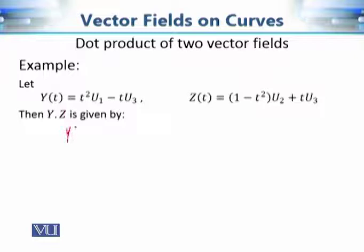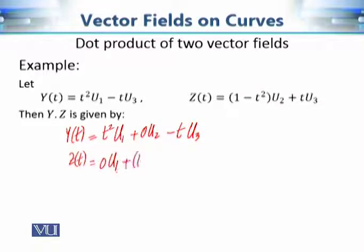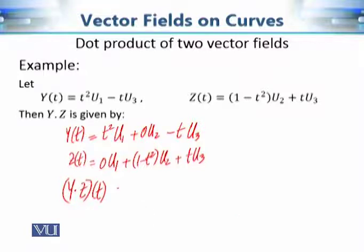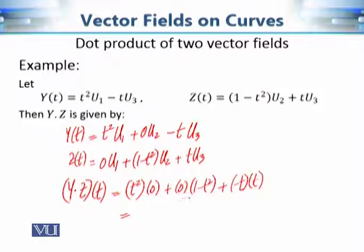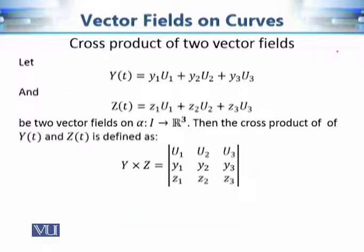For example, with y(t) = t²u₁ + 0·u₂ − t·u₃ and z(t) = 0·u₁ + (1−t²)u₂ + t·u₃, the dot product y·z equals t²·0 + 0·(1−t²) + (−t)·t = −t². The input is a real number and the output is a real number, so it is a real-valued function of one variable.